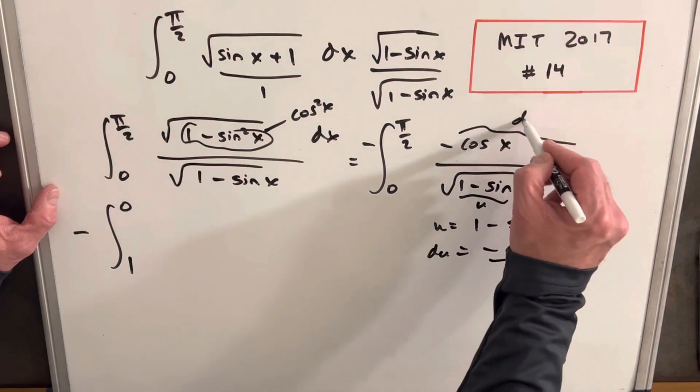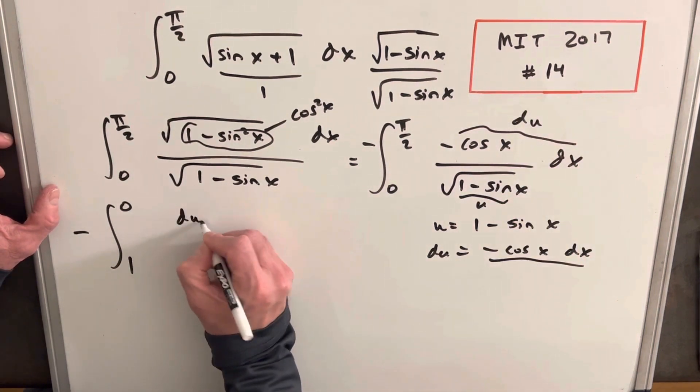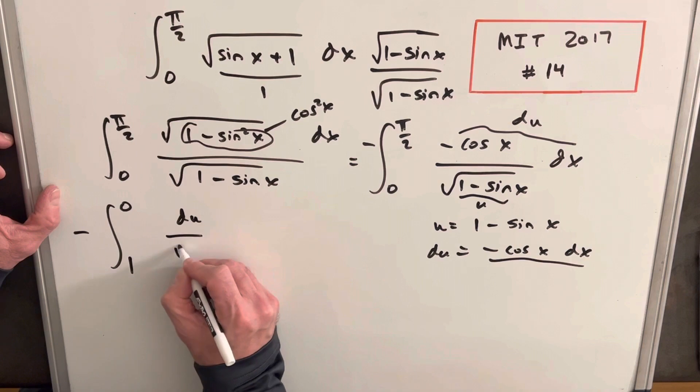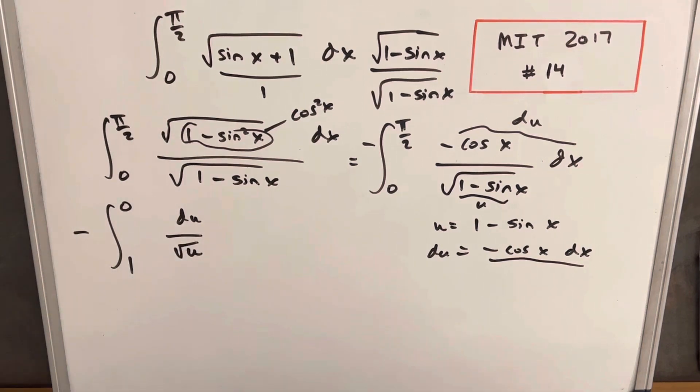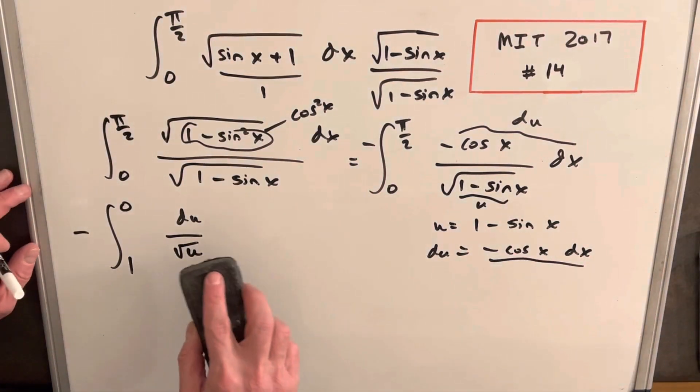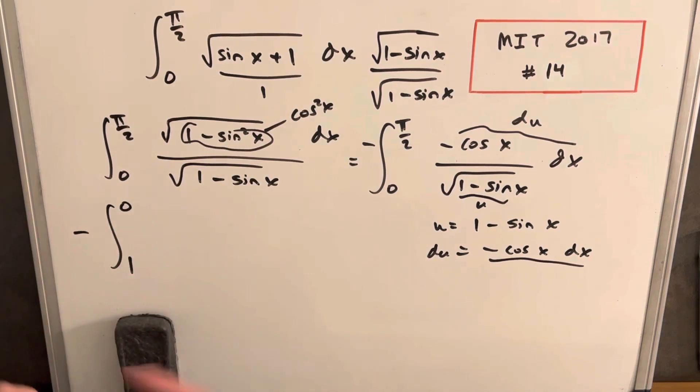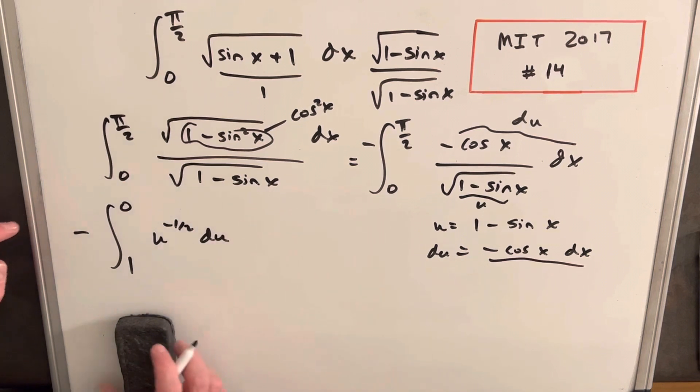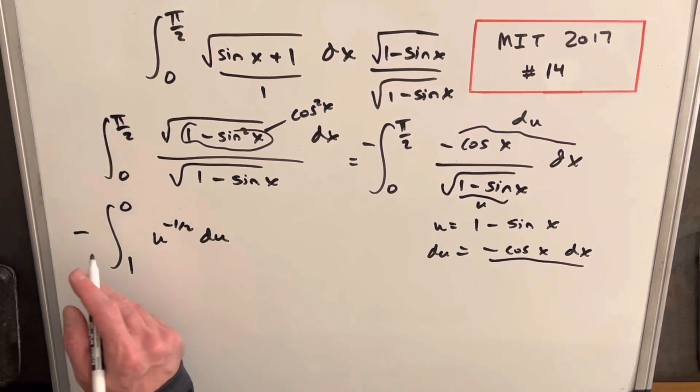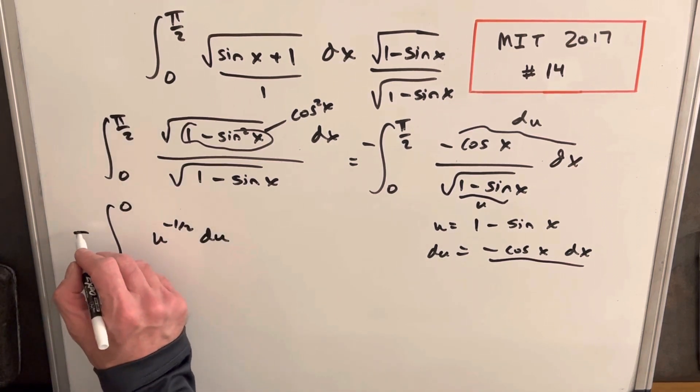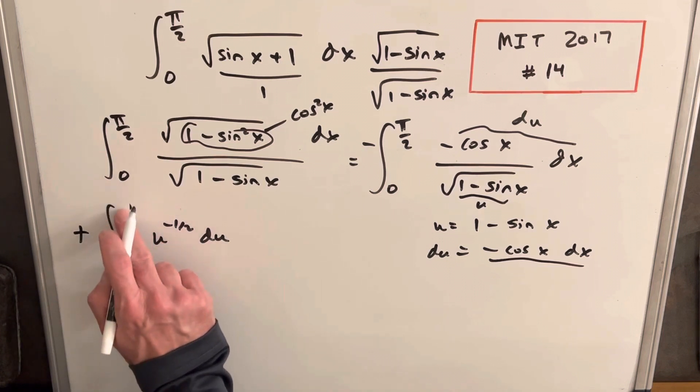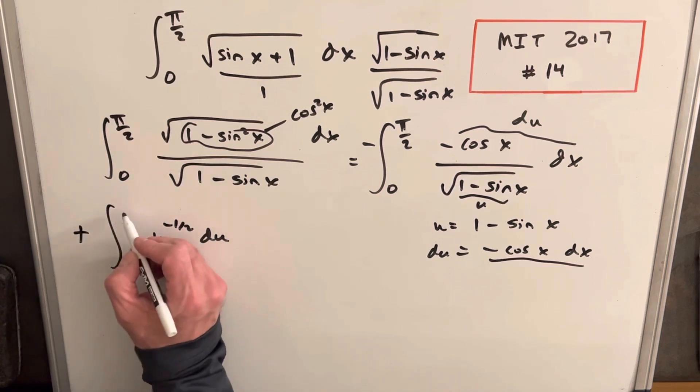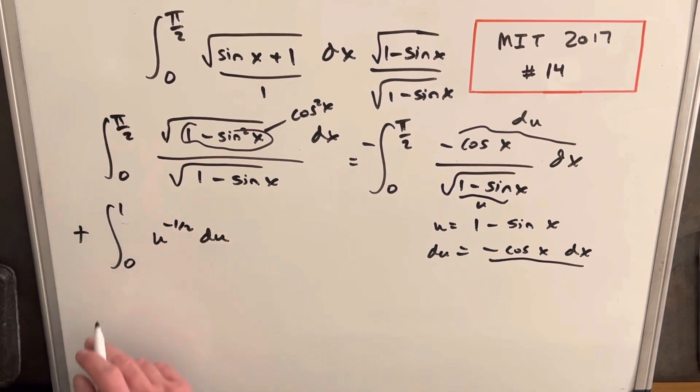This whole numerator is going to be du. So we'll write this as just du over the square root of u. But actually to set this up, what I want to do, I'm just going to write that in the numerator. So I'll write this as u to the minus 1 half du, because we're going to use the power rule. One other thing, we don't need to do this, but let's change our bounds of integration. So by changing the sign, we can flip the bounds and integrate from 1 to 0.